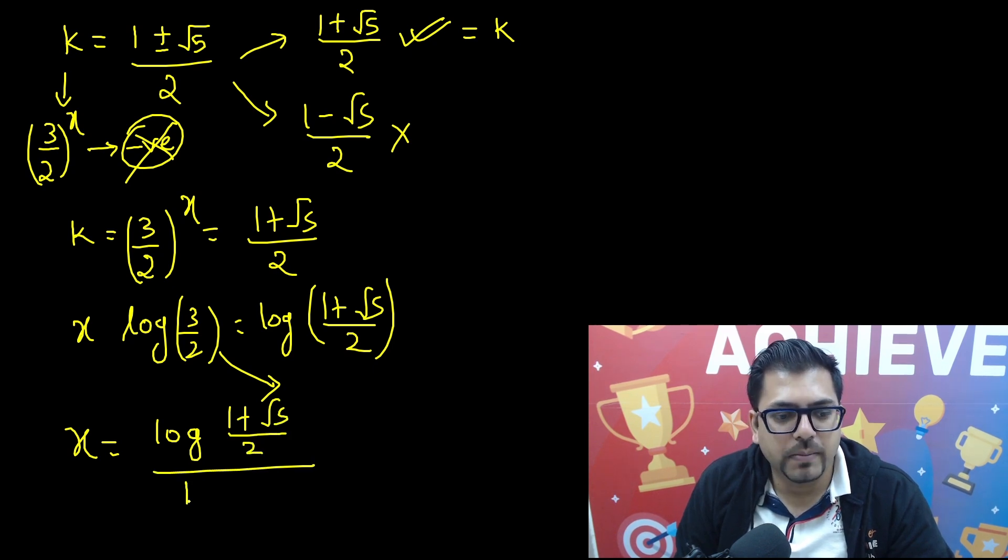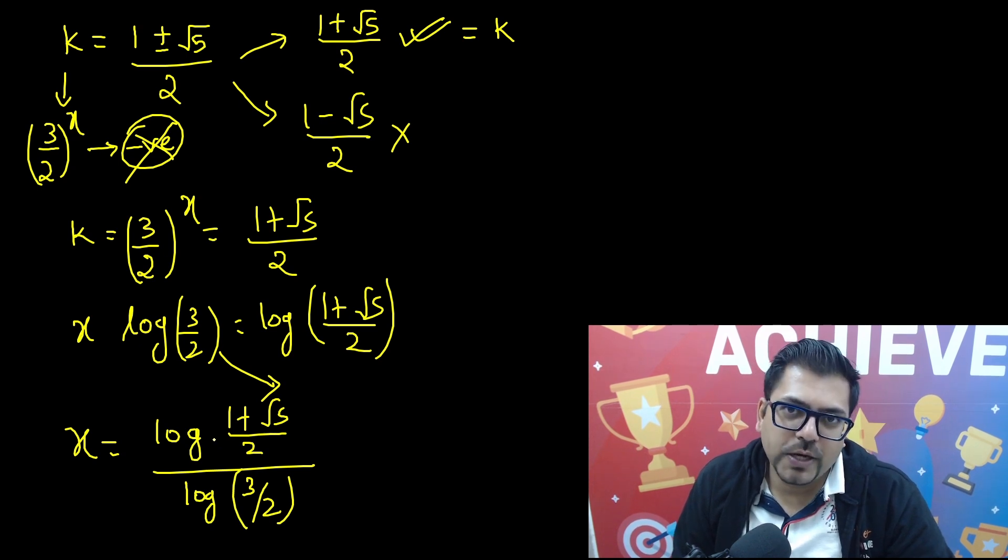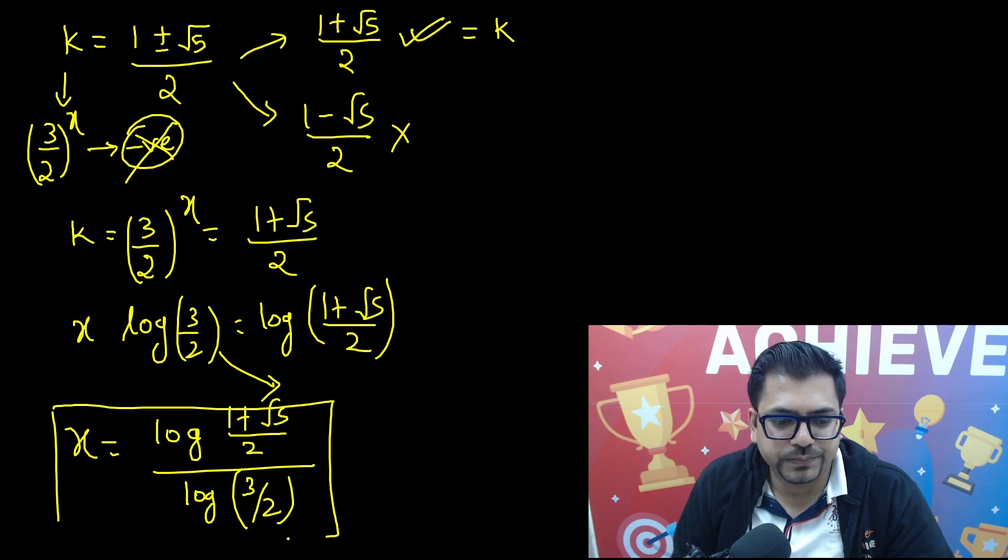So x is equals to logarithm of 1 plus root 5 whole divided by 2, and whole divided by log of 3 by 2. Either you can put this 3 by 2 in the base of the first log, or you can let it be like this, but this becomes your final answer. Okay, I hope you like the video.